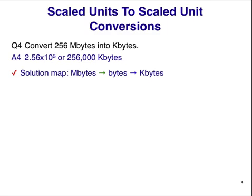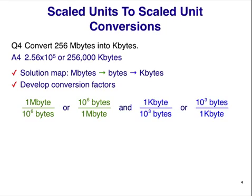Again, the strategy is to convert scaled to base, and then base to scaled. We'll need two sets of conversion factors. The green set for megabytes to bytes, and the blue set for bytes to kilobytes. Remember, we'll only need one from the green and one from the blue, eventually. How do we decide which ones? It's all based on unit cancelling.